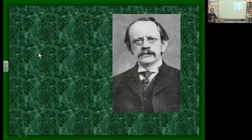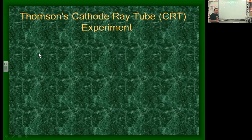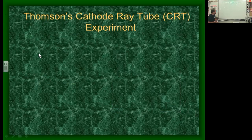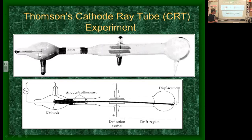Now let's move further in time. JJ Thompson arrives on the scene in 1898 — electricity has been invented now. This guy is basically playing with different elements in gaseous form and running electricity through them. The electricity he used was a high-voltage direct current, meaning electrons only travel one way. He built this thing called a cathode ray tube.